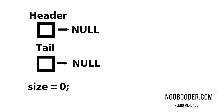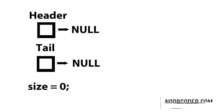Hey, what's up, guys? It's Pedro here from Noobcoder.com. And in this tutorial, we're going to be talking about the prepend method for our linked list. Now what the prepend method does is take a newly created node and insert it to the front of the list. So much like our append method, the prepend method has two cases: if the list is empty, and if the list is not empty.